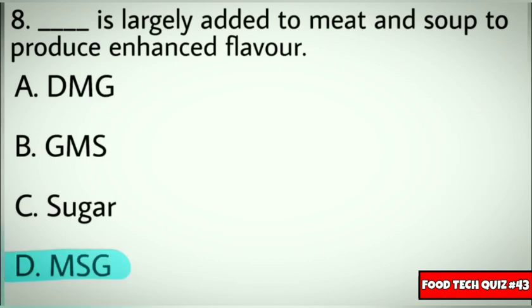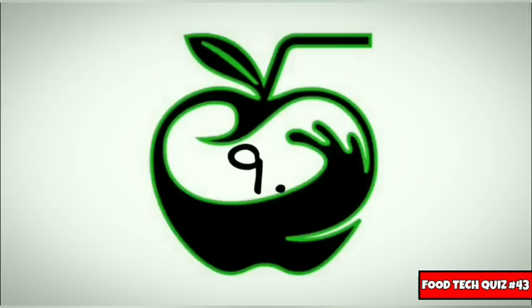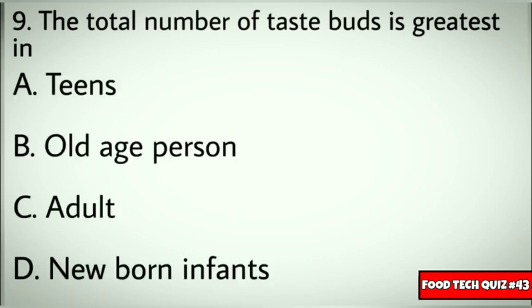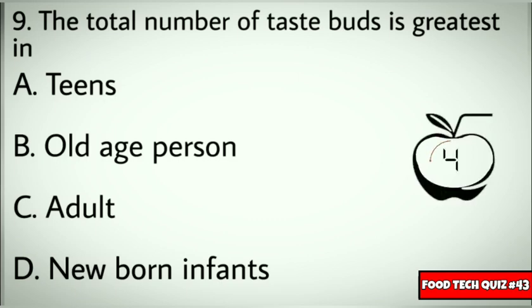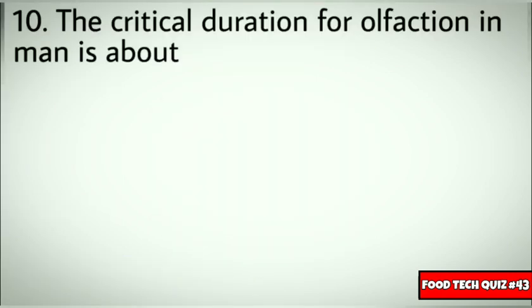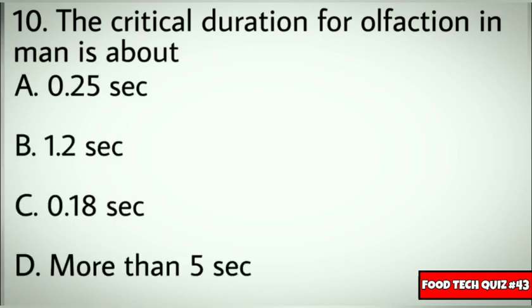Question number 9: The total number of taste buds is greatest in? Options: A) Teens, B) Old age persons, C) Adults, D) Newborn infants. Correct answer: D) Newborn infants. Question number 10: The critical duration for olfaction in man is about? Options: A) 0.25 seconds, B) 1.2 seconds, C) 0.18 seconds, D) More than 5 seconds. Correct answer: C) 0.18 seconds.